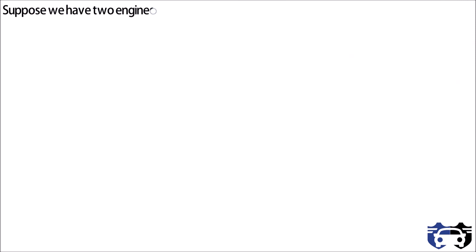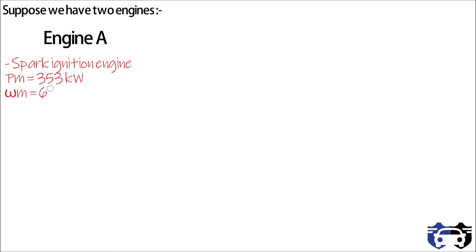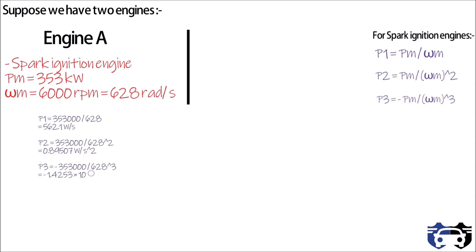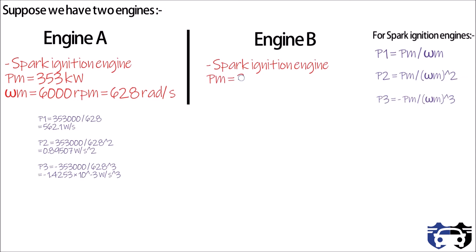Let's take an example. Engine A is a spark ignition engine with a maximum power of 353 kilowatts at omega m equals 6000 rpm, which is approximately 628 radians per second. Calculating p1, p2, and p3 for this spark ignition engine gives the corresponding values. Engine B is also a spark ignition engine with a maximum power of 377 kilowatts at omega m equals 6300 rpm, approximately 660 radians per second.